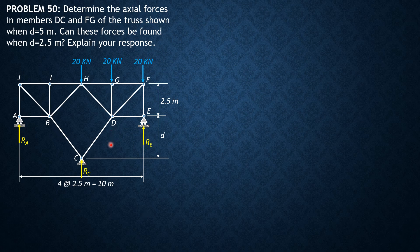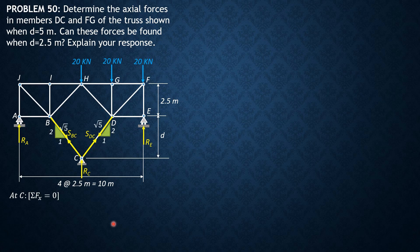These members are two-force bodies. We call the stress in BC as S_BC and in CD as S_DC. The slope is 5 vertical, 2.5 horizontal, which can be reduced to 1 horizontal, 2 vertical, with square root of 5 as the hypotenuse. Summation of forces in x equals zero, so we conclude that S_BC equals S_DC because they have the same slope.